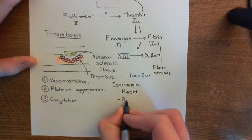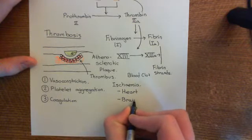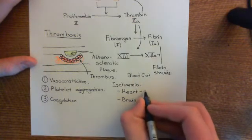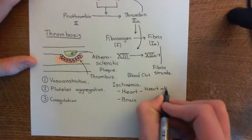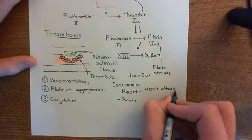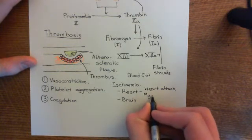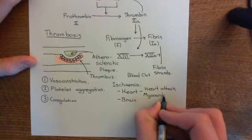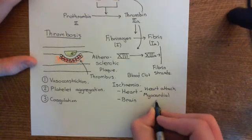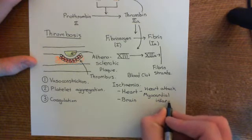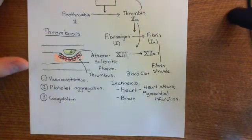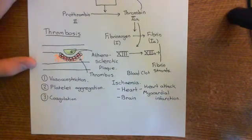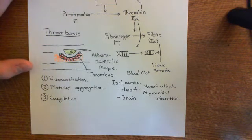If you have ischemia of a portion of the myocardium or a portion of the heart, then that leads to what's known as a heart attack, or the proper name for a heart attack is a myocardial infarction. Myocardial means pertaining to the myocardium, which is just a fancy word for the muscle of the heart, and infarction means dying due to lack of blood supply. What happens in a heart attack is that when you have no blood coming to a certain portion of the heart, that portion of the heart dies if it remains ischemic for long enough.